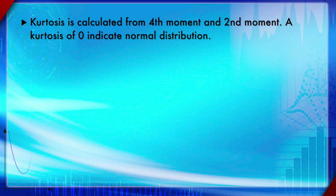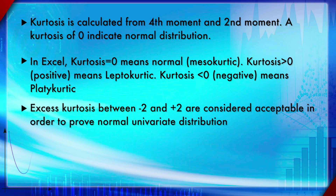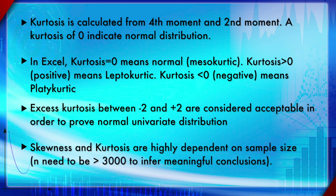Skewness of zero indicates a symmetric distribution. A rule of thumb: skewness less than −1 or greater than +1 is highly skewed; between ±0.5 and ±1 is moderately skewed; between −0.5 and +0.5 is approximately symmetric. Kurtosis: a value of 3 (excess kurtosis 0) indicates normal distribution. Excess kurtosis between −2 and +2 is considered acceptable. Both skewness and kurtosis require n greater than 3,000 for meaningful conclusions.